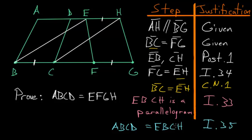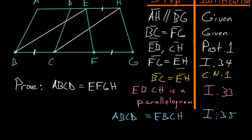With the same logic, we can show that EBCH is equal to parallelogram EFGH, since they share the same base EH and end on the same parallel line BG. So due to Book 1, Proposition 35, the parallelogram EBCH is equal to the parallelogram EFGH.